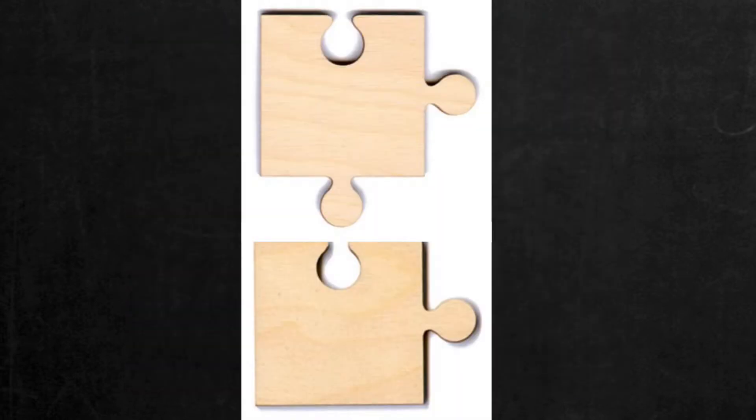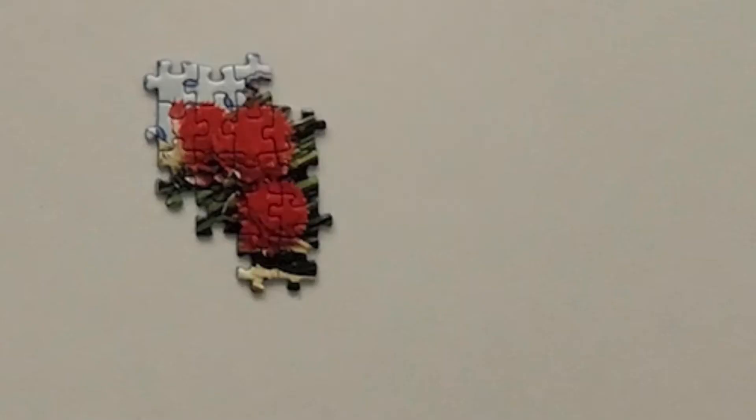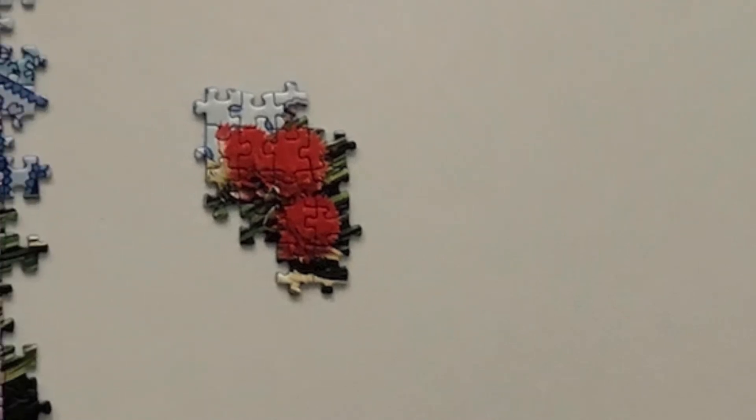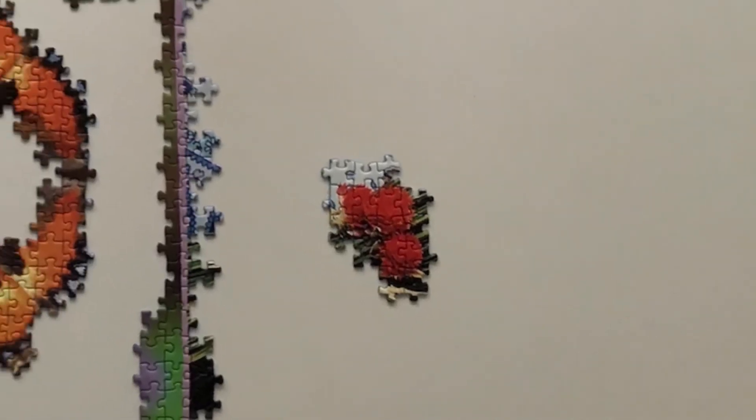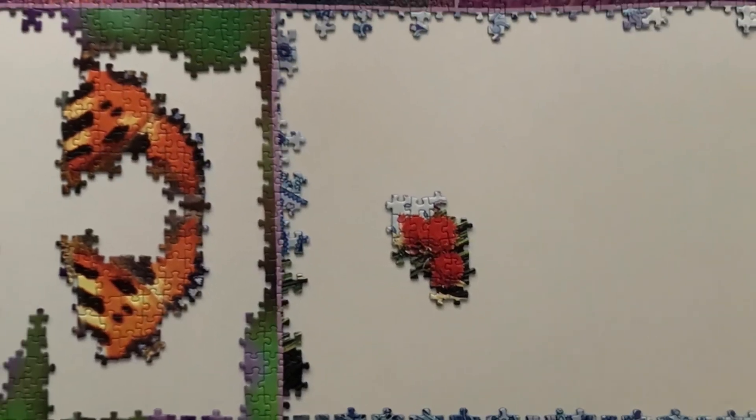Everyone knows the initial strategic move one should make when piecing together a jigsaw puzzle: build the border first. This is because the border pieces by their nature are the easiest to detect and match up. Also, once you have borders, it's easier to orient the various smaller images on the inside with reference to the larger external framework.